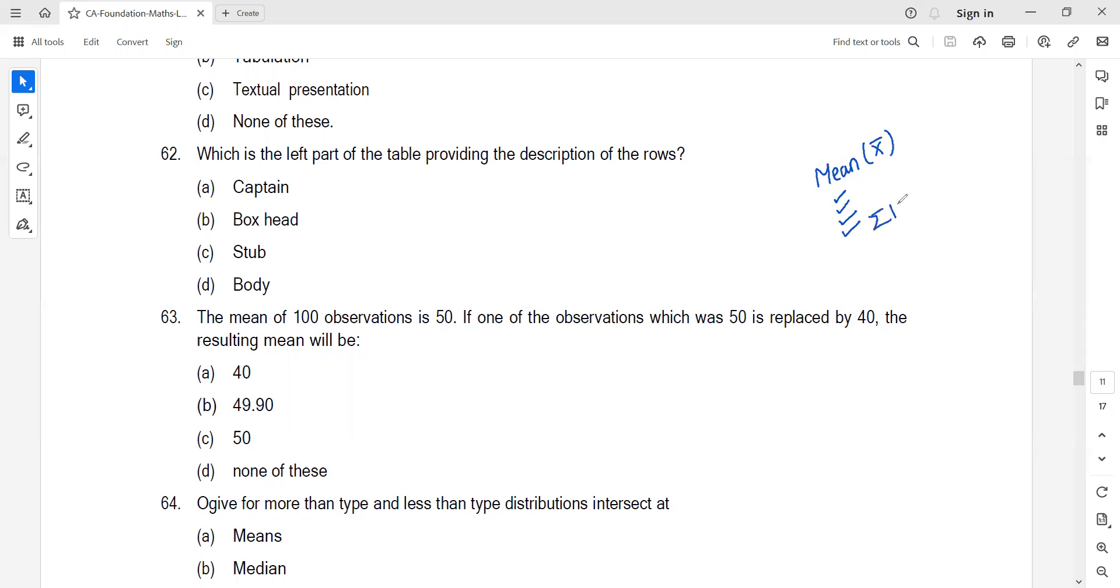Mean deviation from respective mean is defined as zero. We also studied combined mean, which is N1 X1 bar plus N2 X2 bar upon N1 plus N2. The answer will be 49.50. Next question, again a theoretical question.